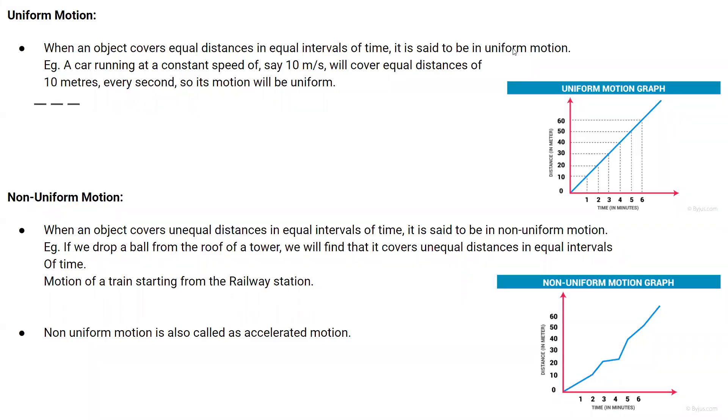Uniform motion and non-uniform motion, chapter motion class 9. So what is the difference between uniform motion and non-uniform motion? Uniform motion: when an object covers equal distances in equal intervals of time, it is said to be in uniform motion.